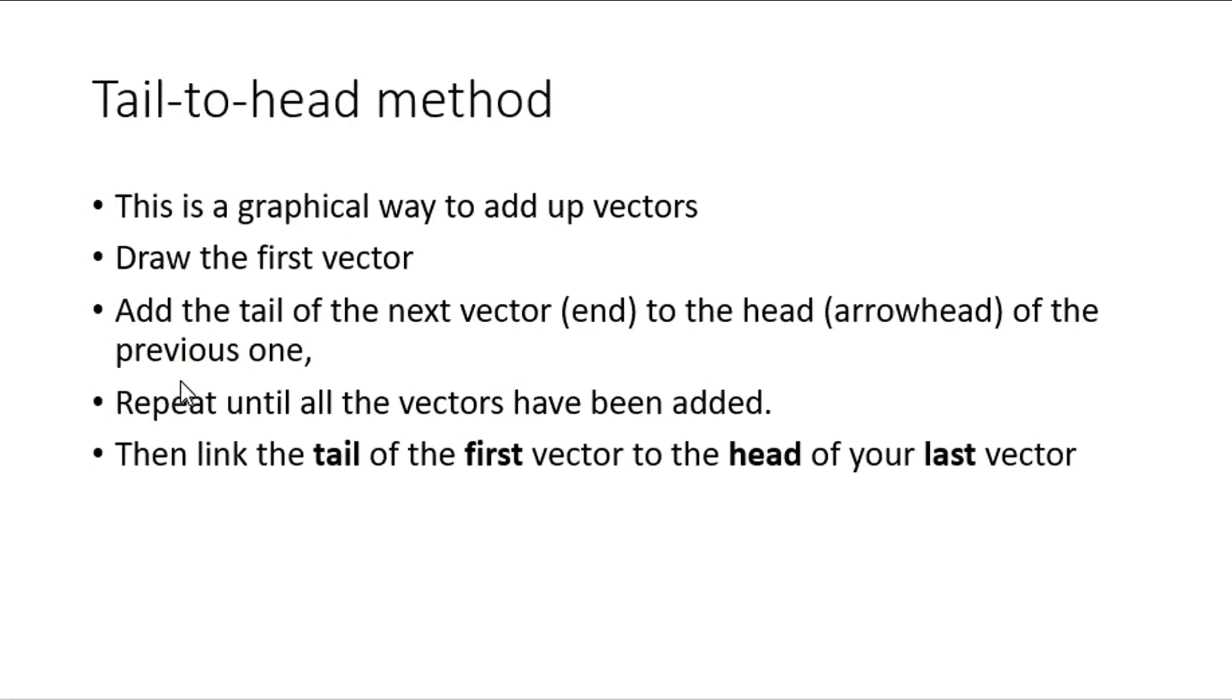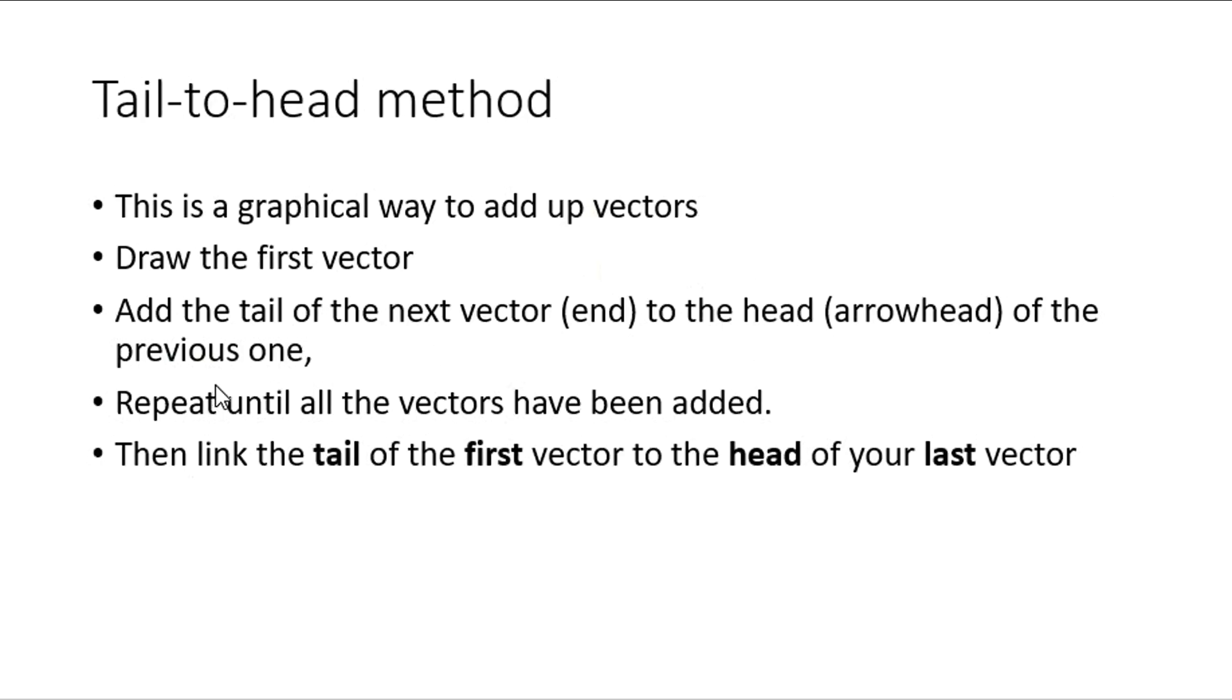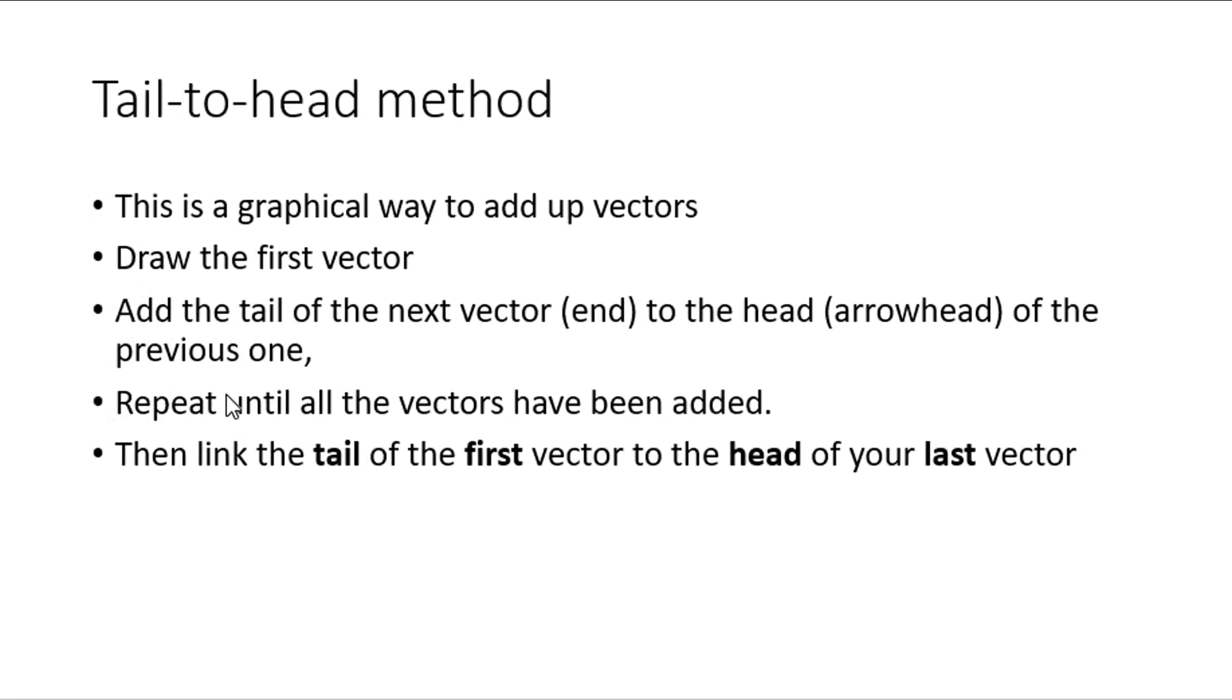Now what we do is link the tail of the first vector to the head of the last vector. I've linked the tail of the first vector over here to the head of my last vector right over here. The tail of my first and the head of my last is linked. So that's the tail-to-head method for more than two vectors.